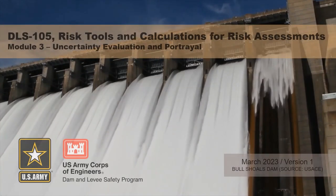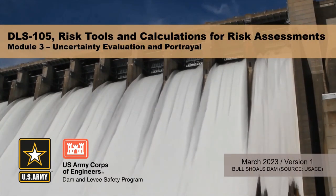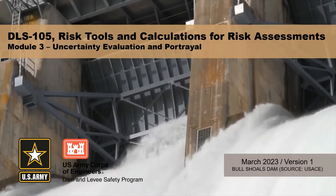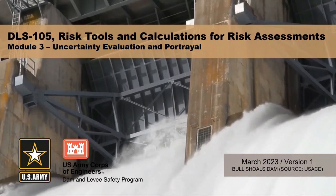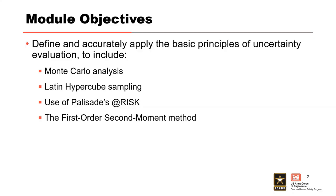This is Module 3 of DLS 105: Risk Tools and Calculations for Risk Assessments — Uncertainty Evaluation and Portrayal. The objective of this module is to define and apply the basic principles of uncertainty evaluation, including Monte Carlo analysis, Latin hypercube sampling, using AtRisk, and the first order second moment method.